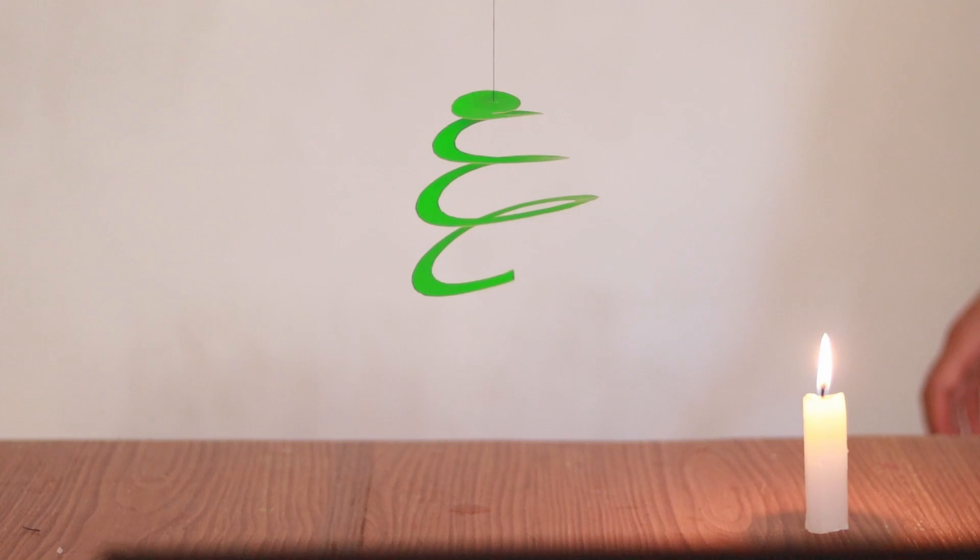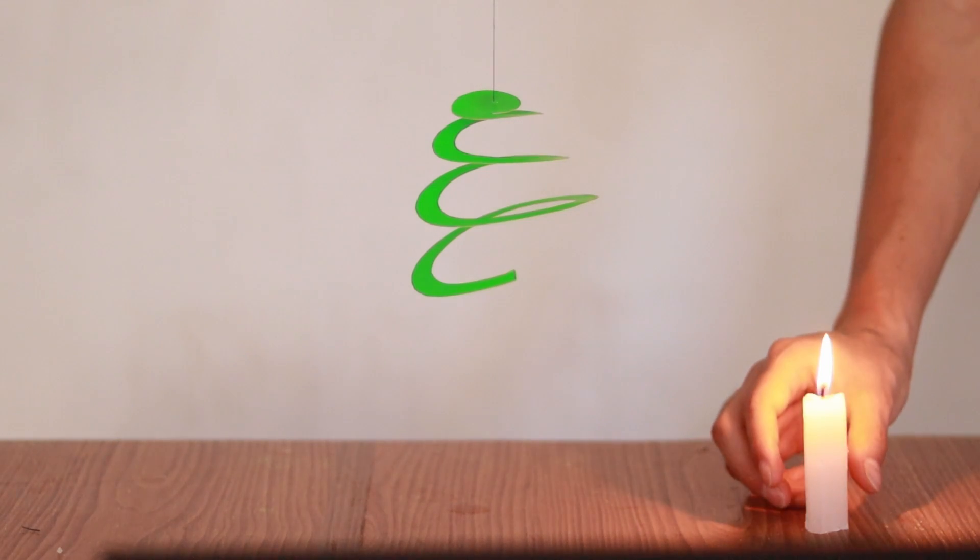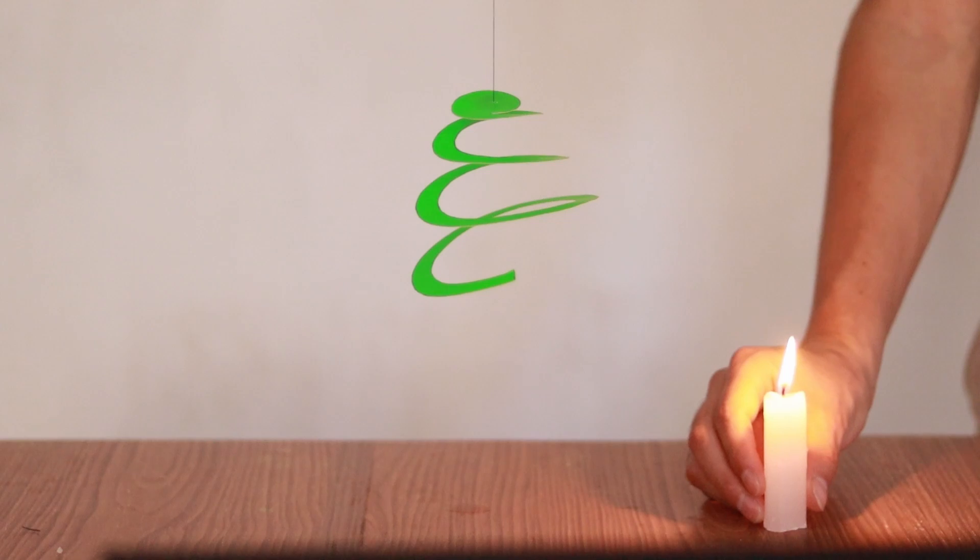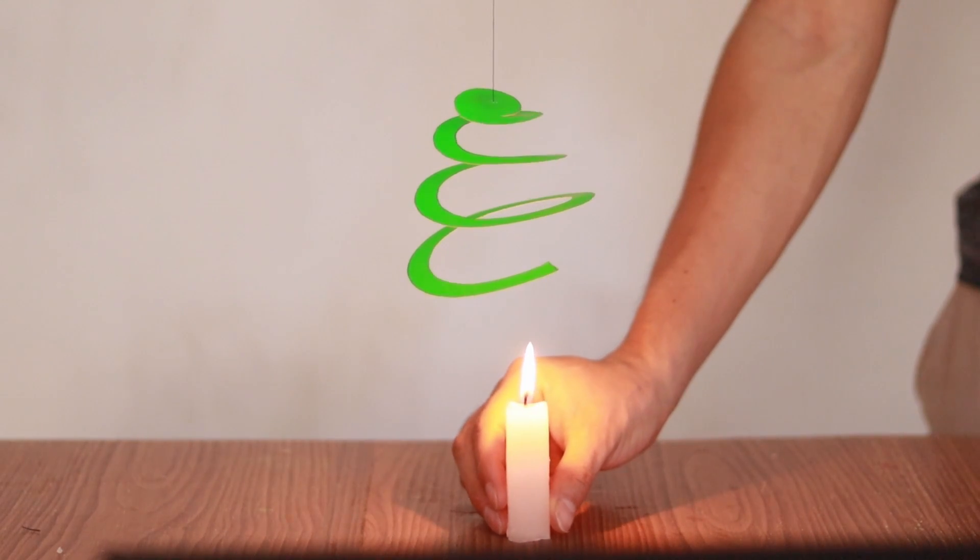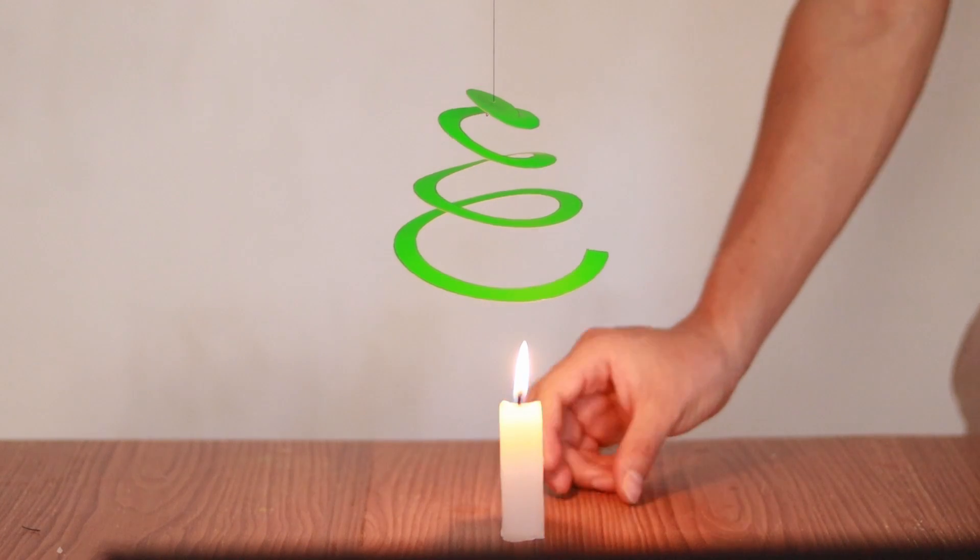As you can see at this moment, the spiral is motionless. But if we place the candle under the spiral, being careful not to burn it, we can see how it begins to rotate.